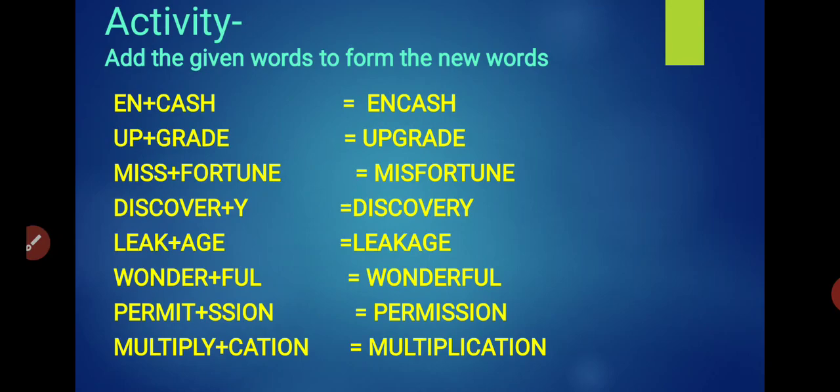You can see, cash is an English word, but we are adding some alphabets in front of it, letters E and N. When we join these alphabets EN with cash, we get a new word. So EN that we added are new letters, a prefix, letters that come before the main word.